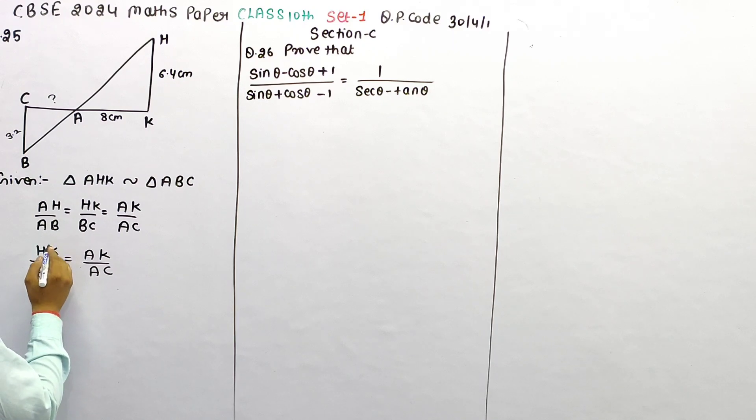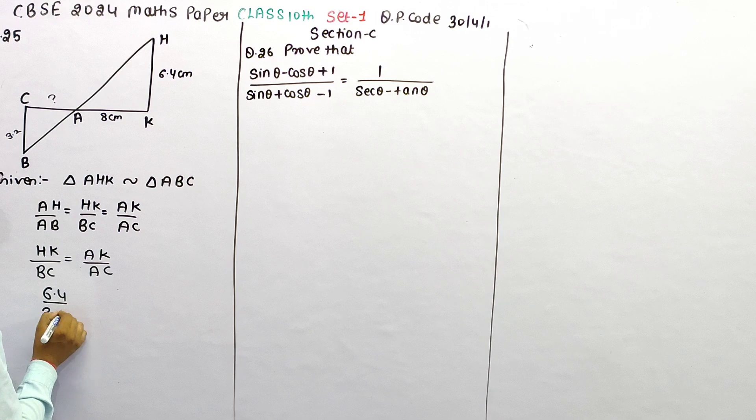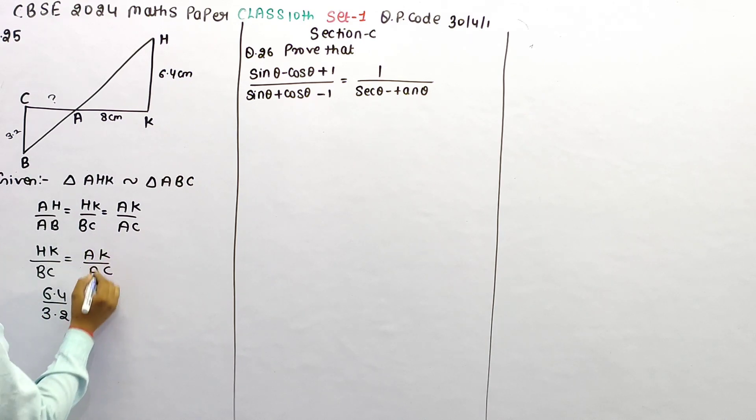The value of HK is 6.4, BC's value is 3.2, AK's value is 8, and AC's value we need to find here.